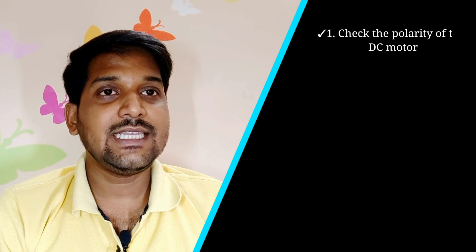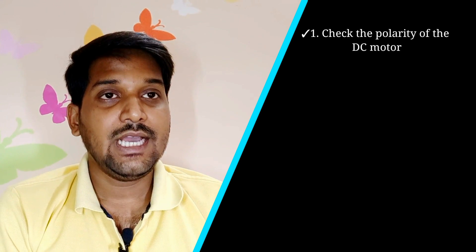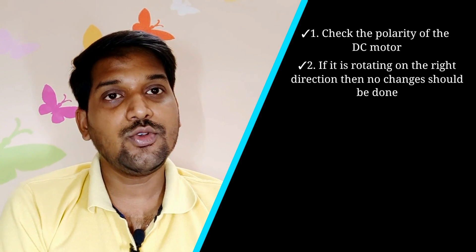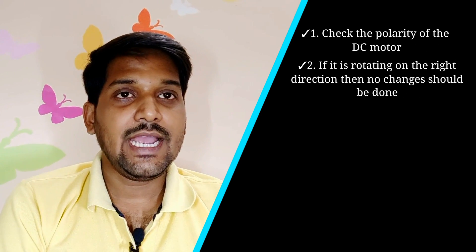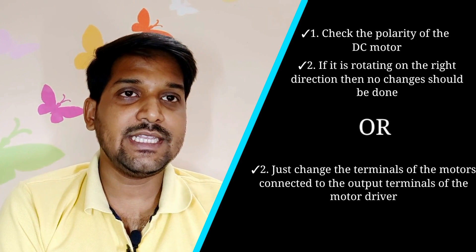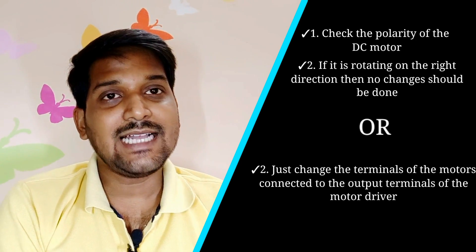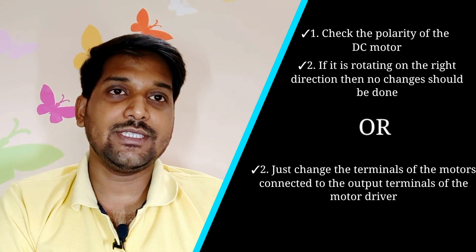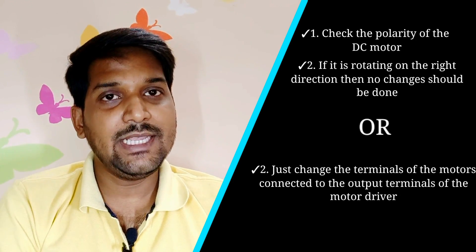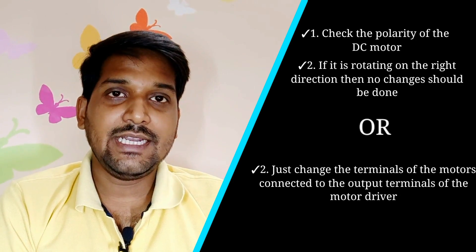First we will check the polarity — that is, which direction the motor is rotating. If it is rotating in the opposite direction, such as anti-clockwise, then we simply alternate the terminals connected to the motor driver.